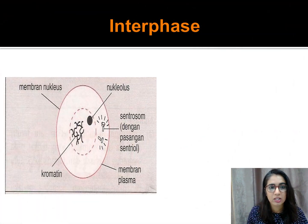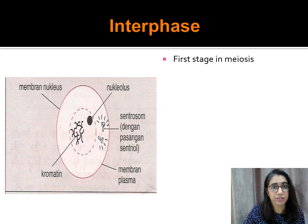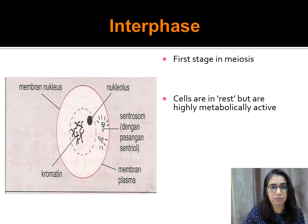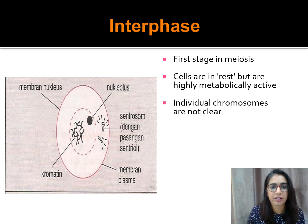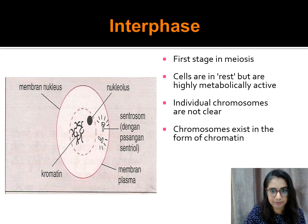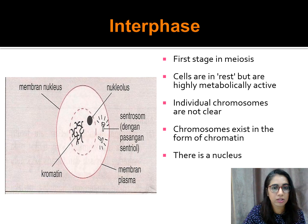The first stage in meiosis is interphase. During interphase, the cells are at rest but are highly metabolically active. The individual chromosomes are not yet visible; they exist in the form of chromatin. A nucleus is still present, and the cell is diploid.